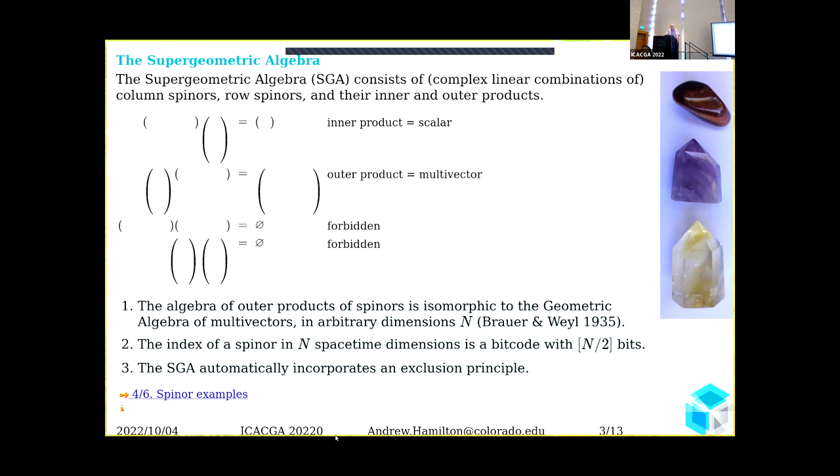One of the things I want to emphasize is that the index of a spinor in N space-time dimensions is a bit code with N/2 bits. That seems to me quite fundamental. The multivector algebras are products of two, and they arise as an outer product of the spinor algebras.